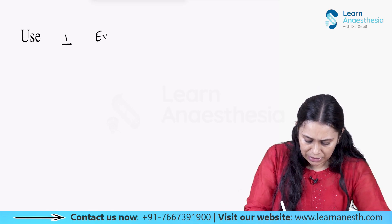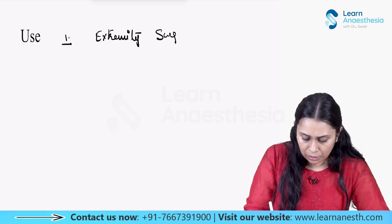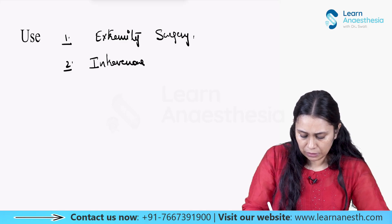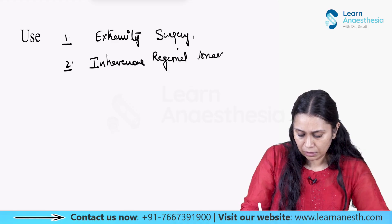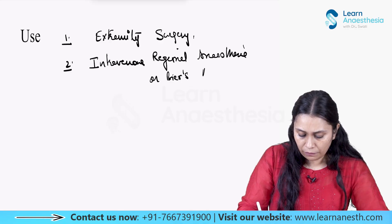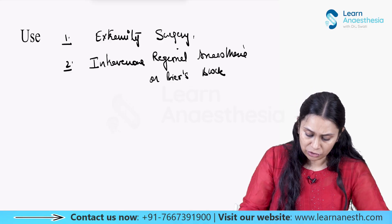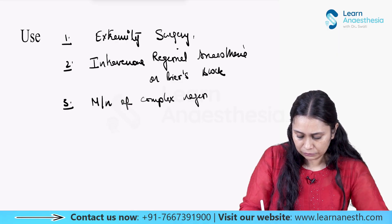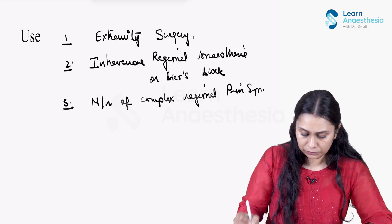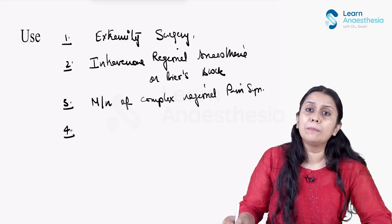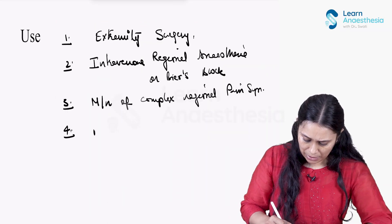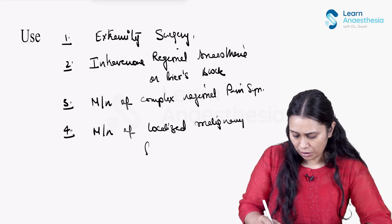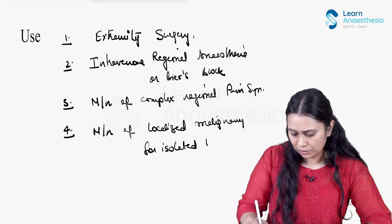To summarize the uses: tourniquet is used for extremity surgery, for intravenous regional anaesthesia (Bier's block), for management of complex regional pain syndrome, and for management of localized malignancy via isolated limb perfusion.